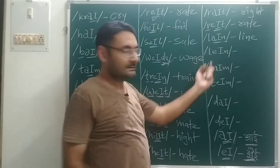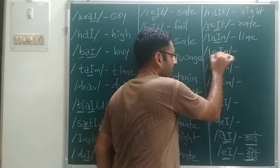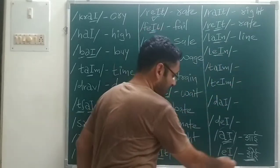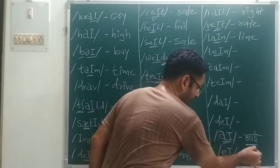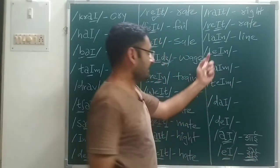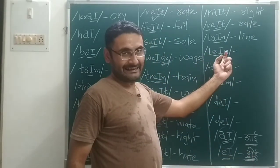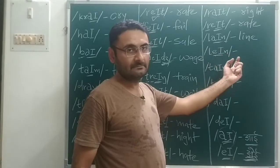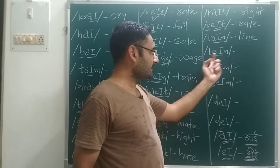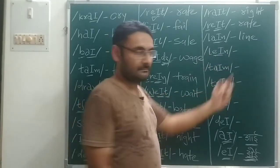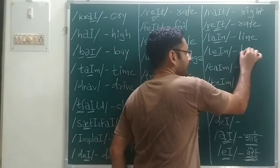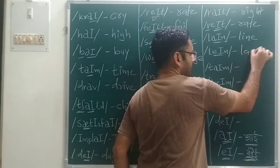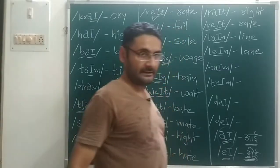Next: L sound, then A sound — L, A, N — working through: L, A, N — that gives us 'lane'. Okay.